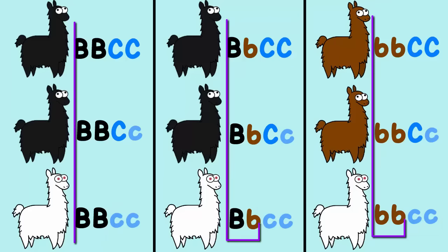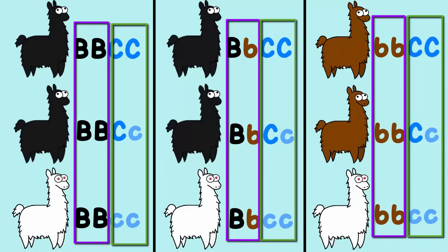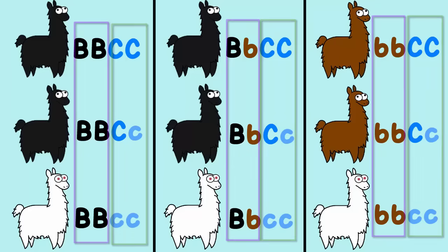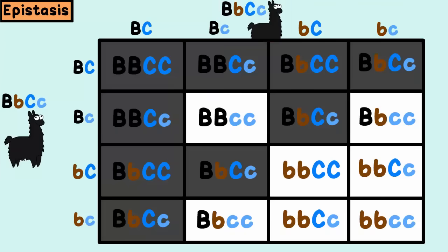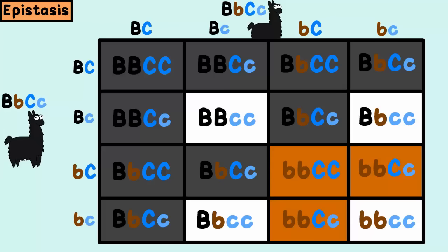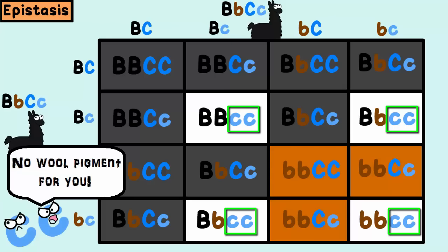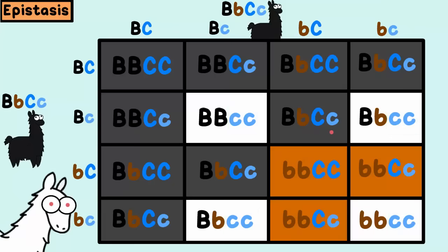Since we have two genes here — the gene for wool color and the gene that controls whether the color is even expressed — this calls for our favorite 16-square dihybrid cross. If you notice in this dihybrid crossing two heterozygote llamas, any llama with big B, big B or big B, little b will typically give a black llama. And little b, little b will typically give a brown llama — in all cases, unless they inherit little c, little c. If the llama has little c, little c in its genotype, then the gene for wool color is not expressed and the llama is albino. This means that no pigment is expressed at all.